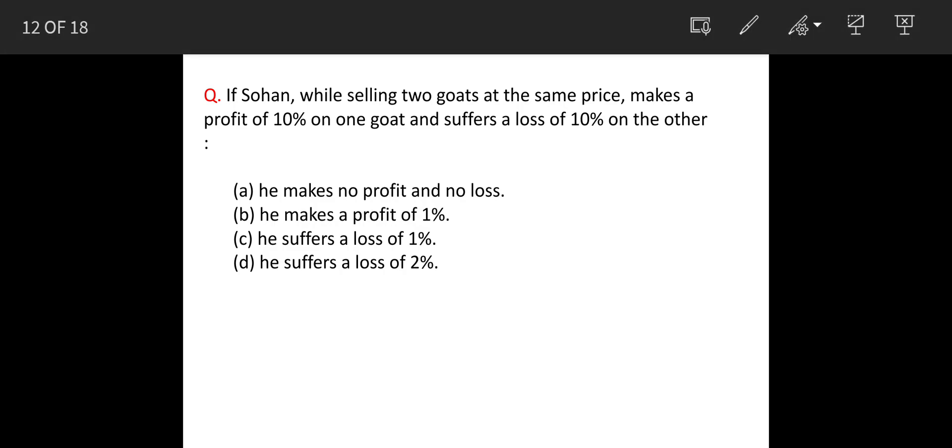Sohan, while selling two goats at the same price, makes a 10% profit on one goat and suffers a loss of 10% on the other goat.